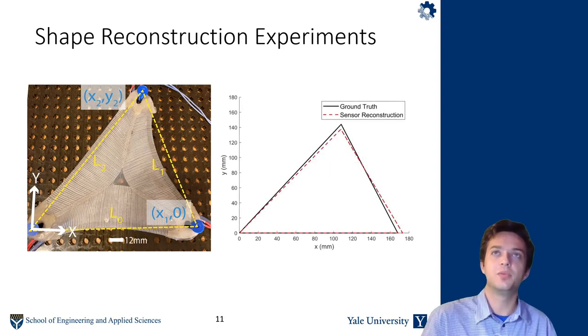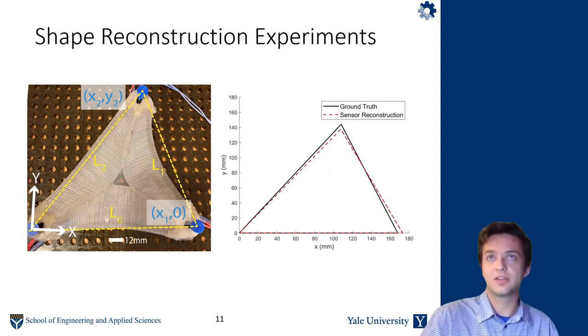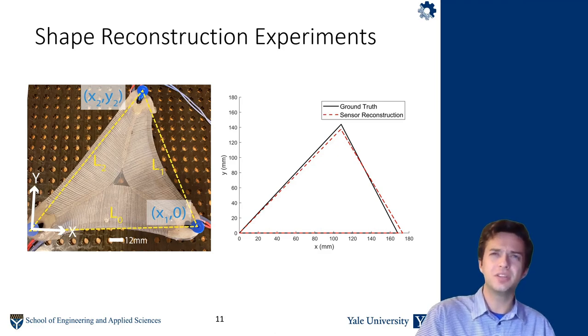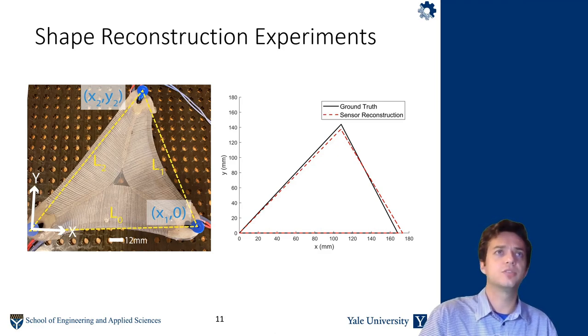So this is what one example, one trial looks like. The black triangle shows the vertices of the ground truth triangle where we know it is in the pegboard, and the red triangle shows the sensor's reconstruction based on the capacitance measurements.